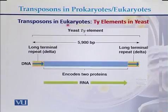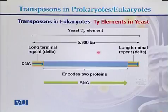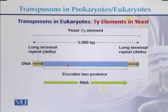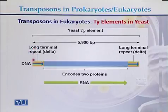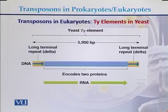In eukaryotes, an example of transposons is the TY element found in yeast. The TY element has a transposase core with two portions — RNA — in the middle, and long terminal repeats (LTRs) on both sides, approximately 5900 base pairs in total.